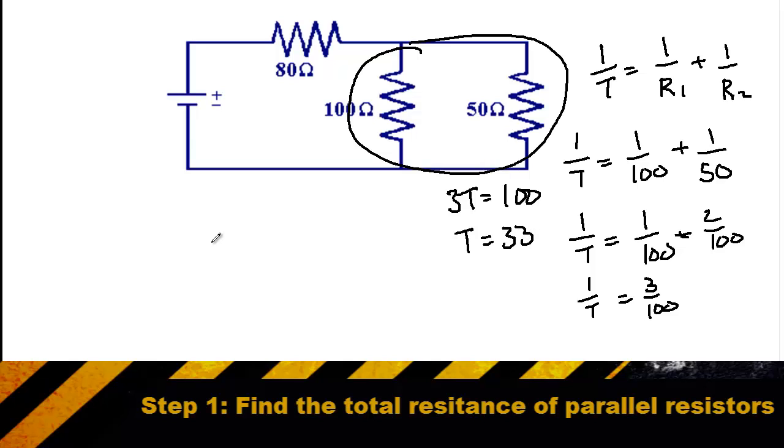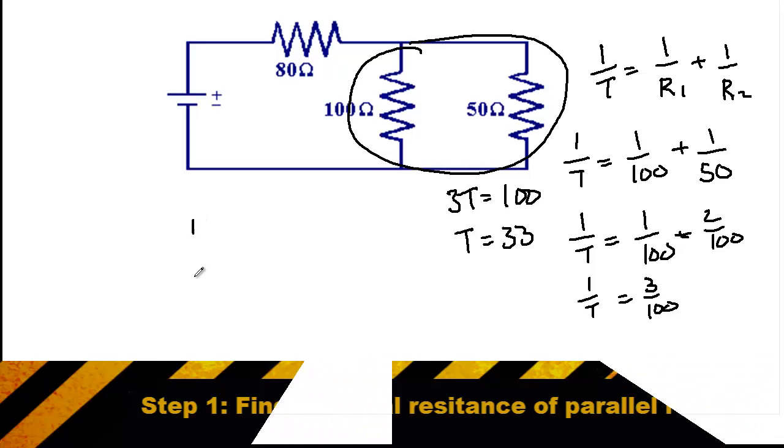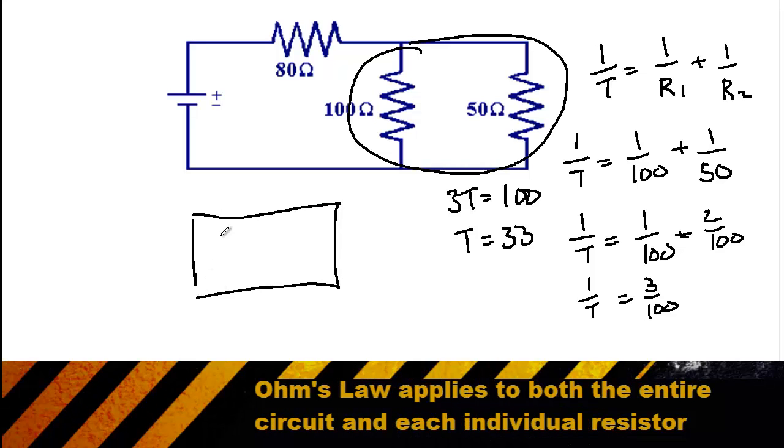From this point on, we'll treat our parallel resistors as one combined 33 ohm resistor. So we could draw a new resistor like this with our original 80 ohms resistor on top and our new 33 ohms resistor on the side. And now since those two resistors are in series, we simply add them up to get a total combined resistance of 113 ohms for the circuit.